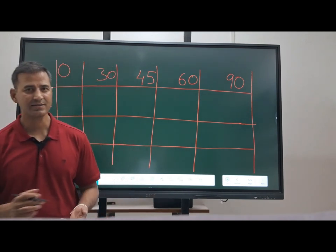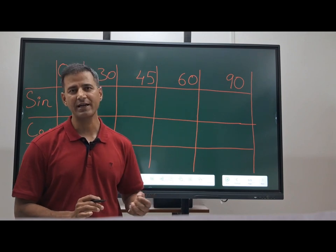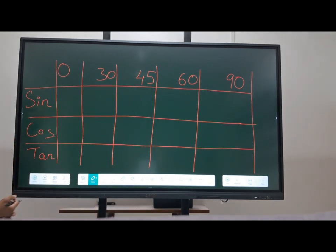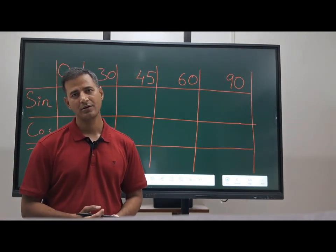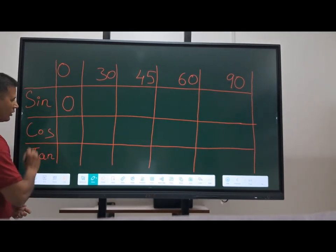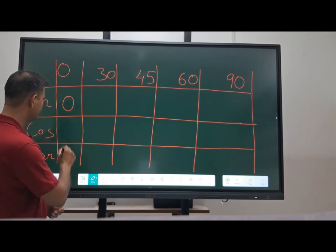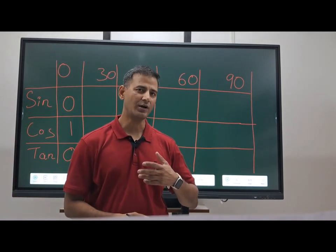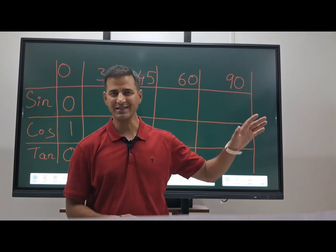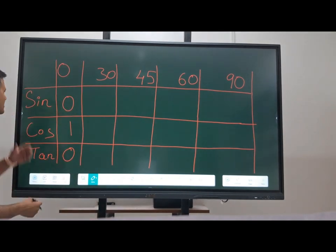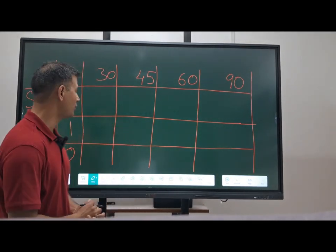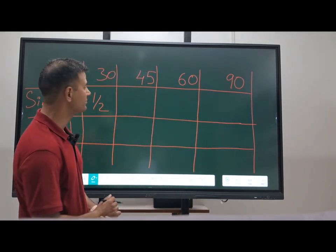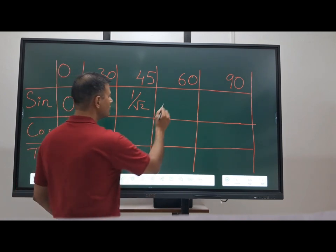Now let us see values at the important angles: 0°, 30°, 45°, 60°, and 90°. Sin 0 = 0, sin 30 = 1/2, sin 45 = 1/√2, sin 60 = √3/2, and sin 90 = 1 — so sine ranges from 0 to 1. Cos 0 = 1, cos 30 = √3/2, cos 45 = 1/√2, cos 60 = 1/2, and cos 90 = 0 — so cosine ranges from 1 to 0.